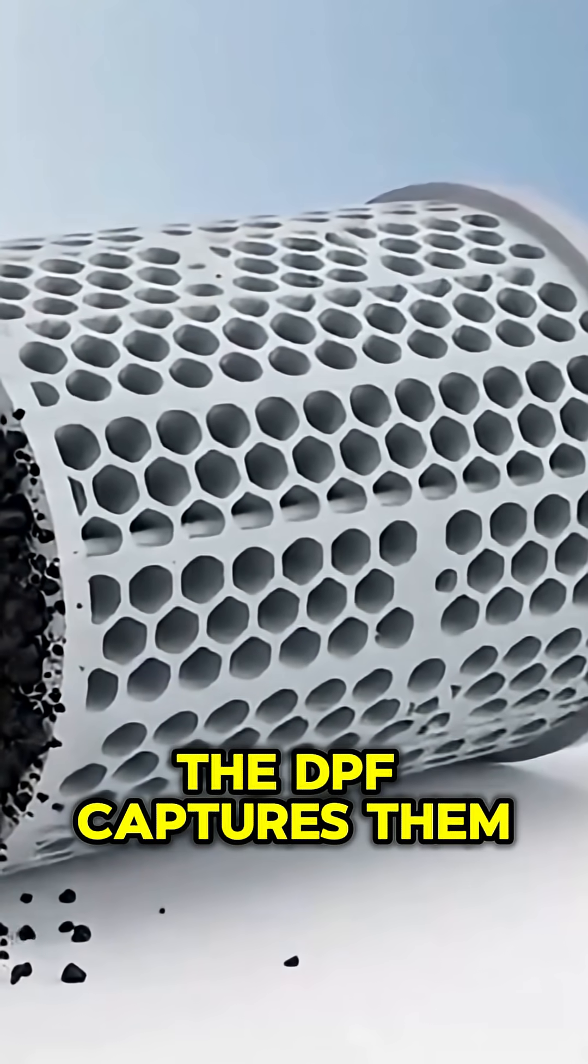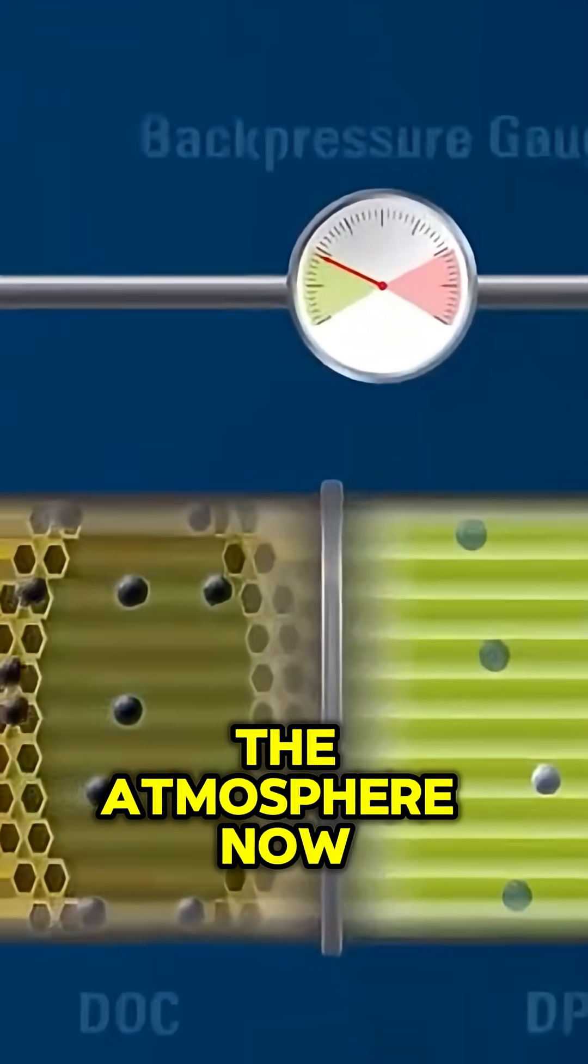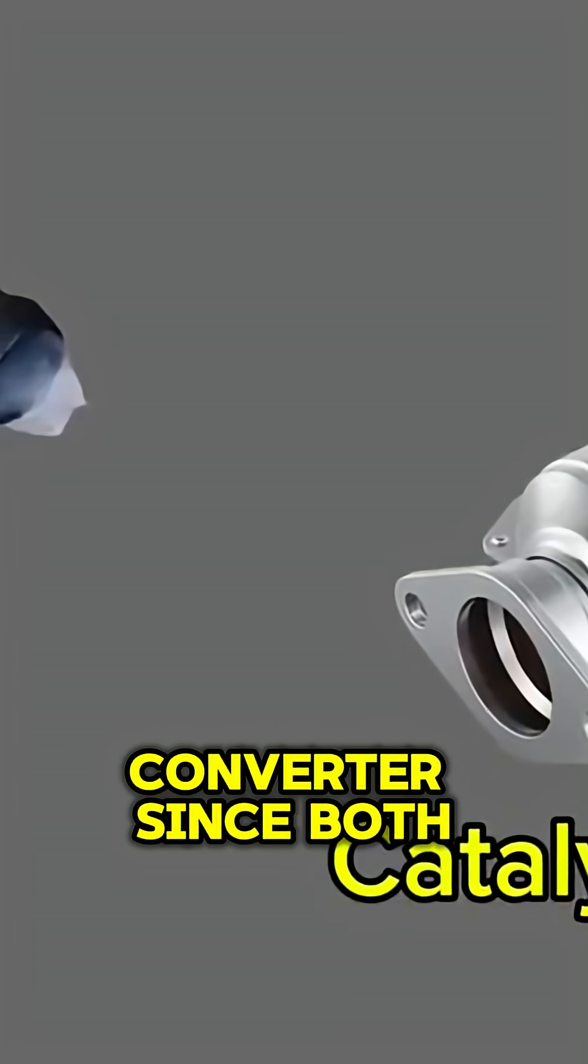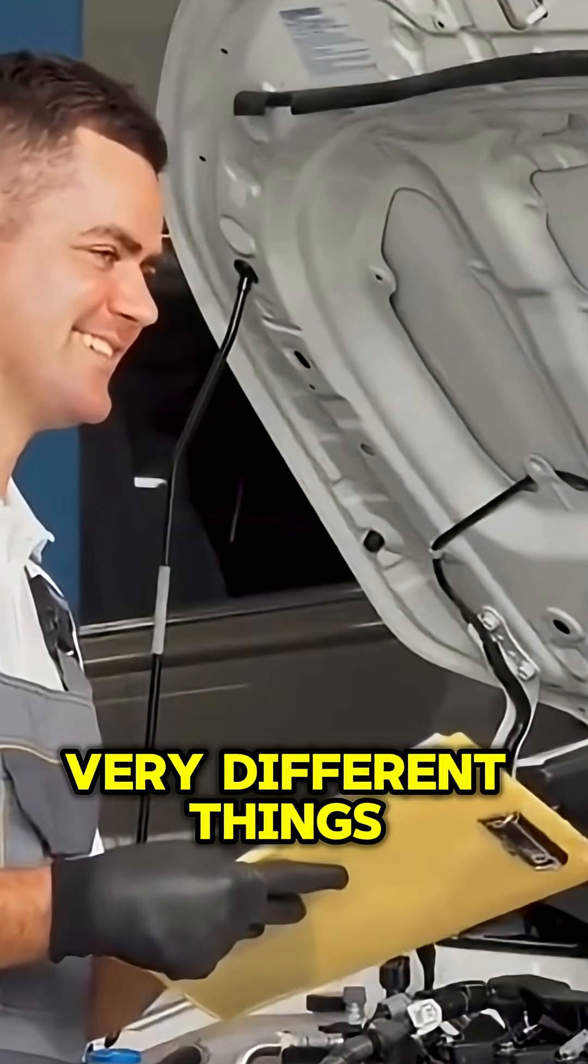The DPF captures them and prevents that soot from ever reaching the atmosphere. Now, it's easy to confuse the DPF with the catalytic converter, since both are part of your exhaust system. But they do two very different things.